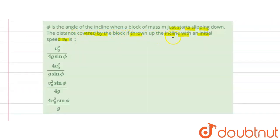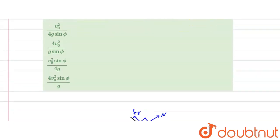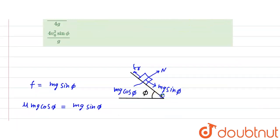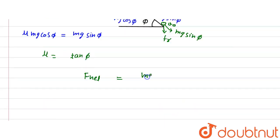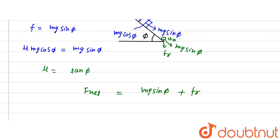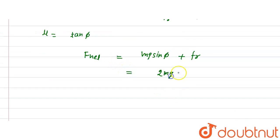Now, when the block is thrown up the incline with initial speed v naught, the force mg sinφ acts downward along the incline. Since friction always opposes motion, it also acts downward when the block moves up. So the net force is mg sinφ plus the friction force, giving f net = 2mg sinφ.